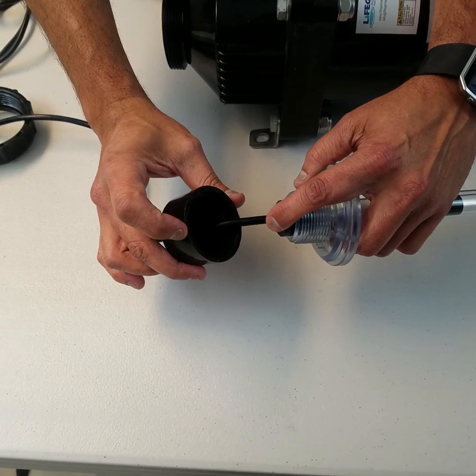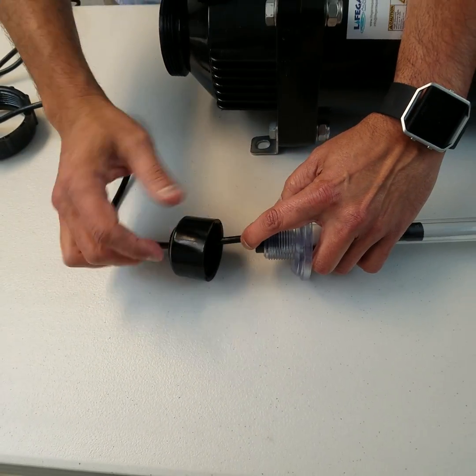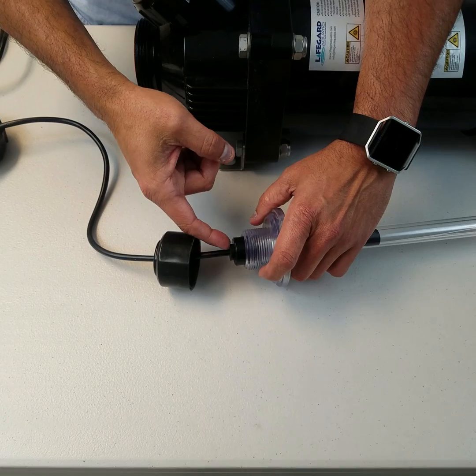You see, this is the part that seals and compression seals the quartz sleeve. This flattened end of the rubber will compress with the flattened end of this cap and it seals the quartz sleeve in place.